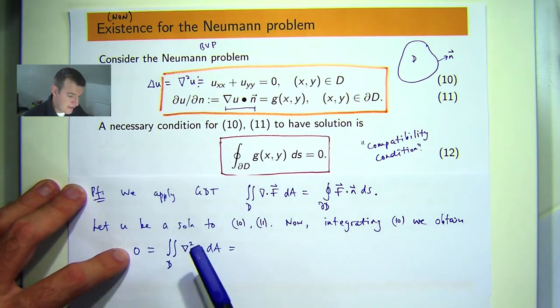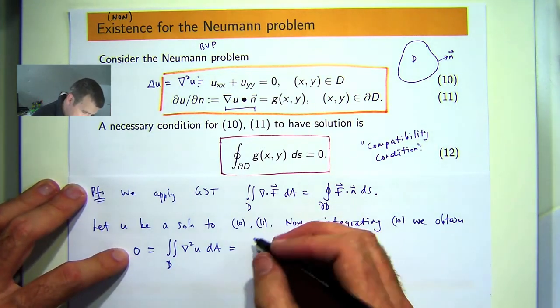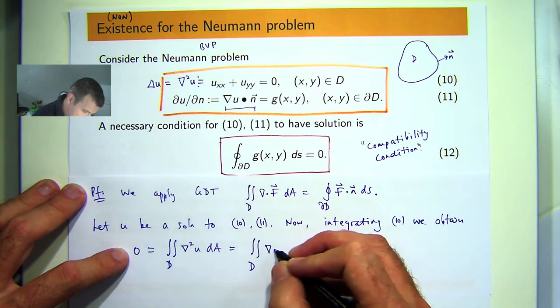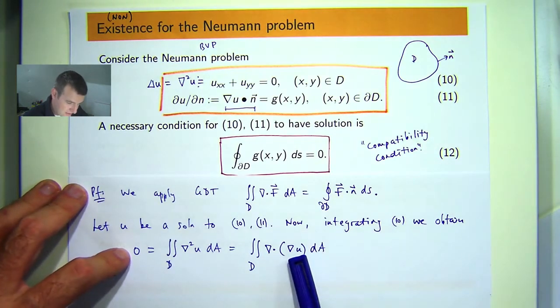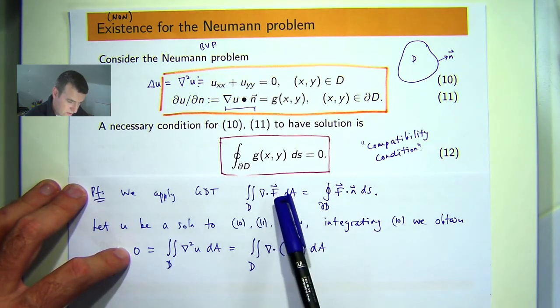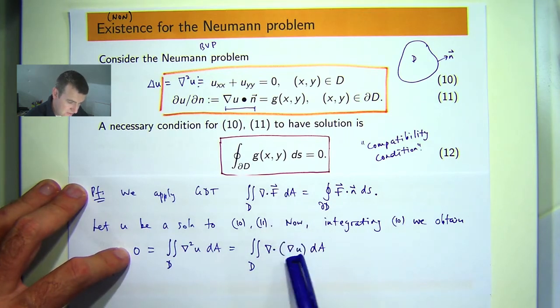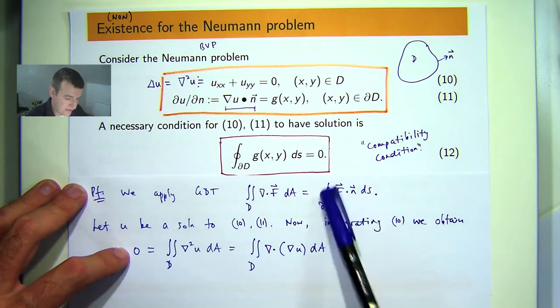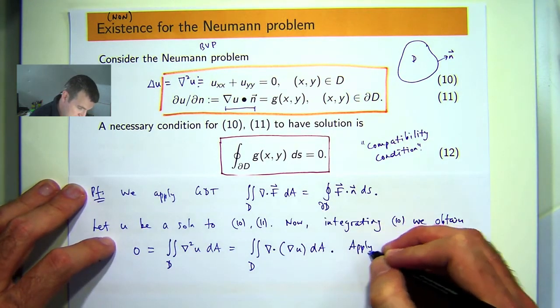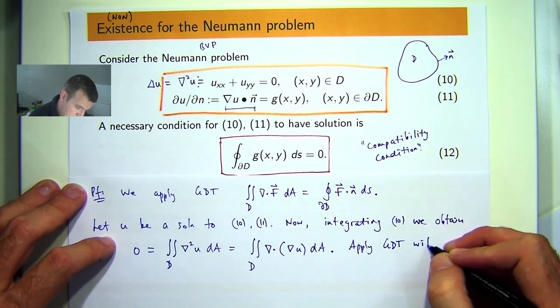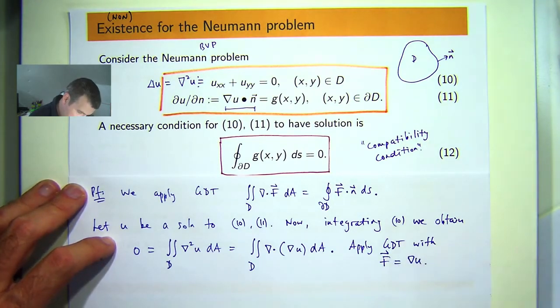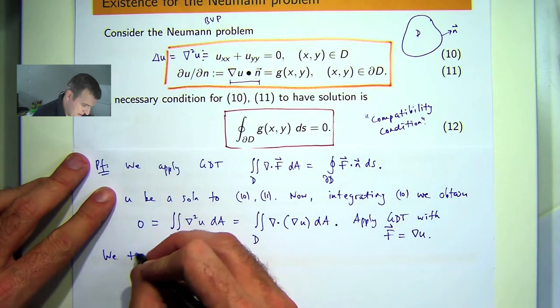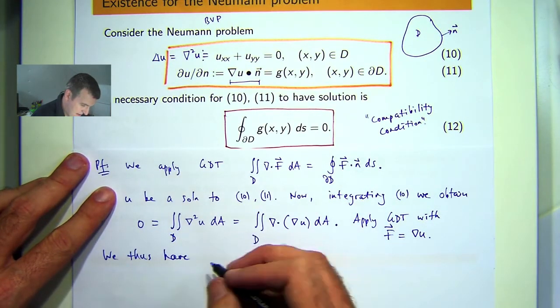Now remember the Laplacian can be written as the divergence of the gradient of u. So if you compare this with this, what I want to do is let this vector field f just be the gradient of u and then I can get this right hand side. So let's apply GDT with f equals this.